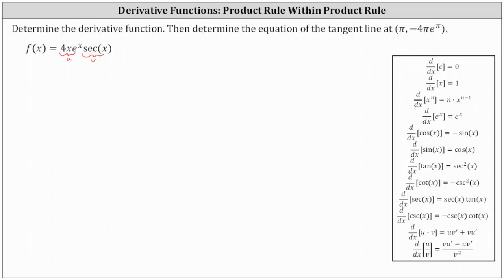Applying the product rule, f prime of x is equal to the first function of four x e to the x times the derivative of the second function — which is the derivative of secant x with respect to x — and then plus the second function of secant x times the derivative of the first function, which is the derivative of four x e to the x with respect to x.